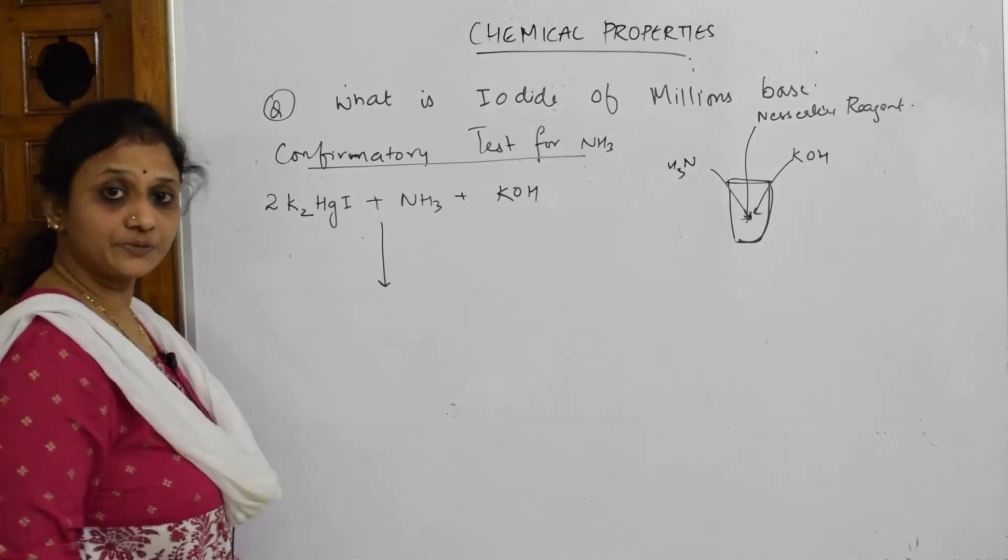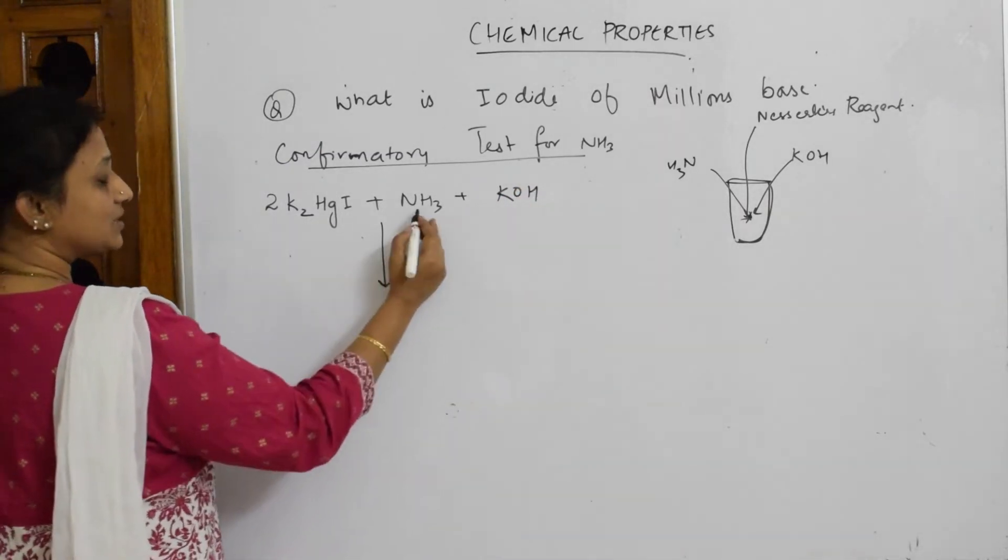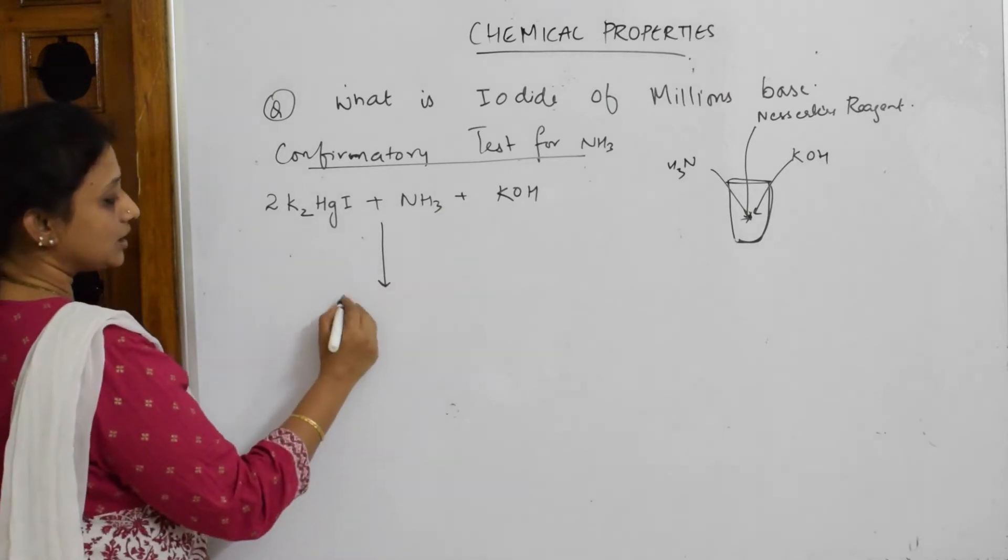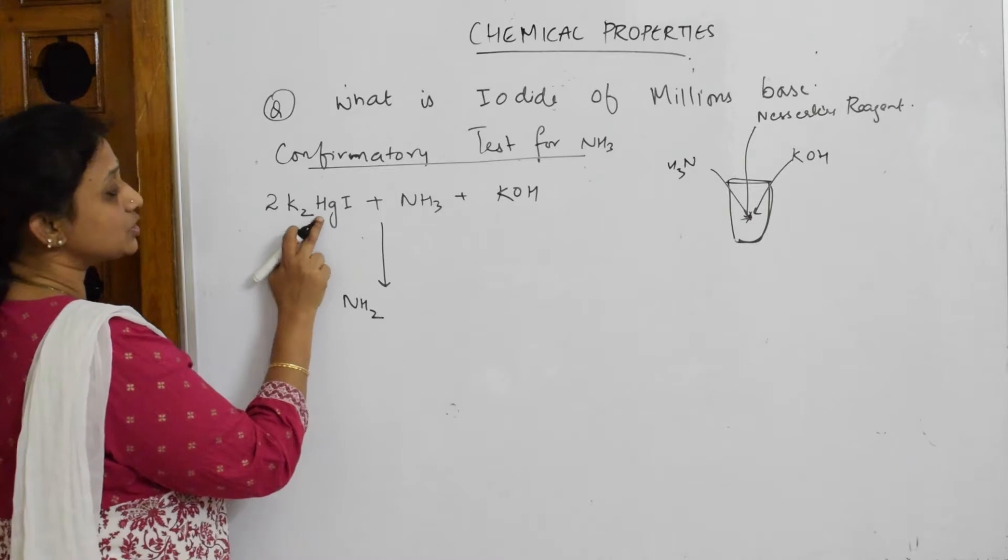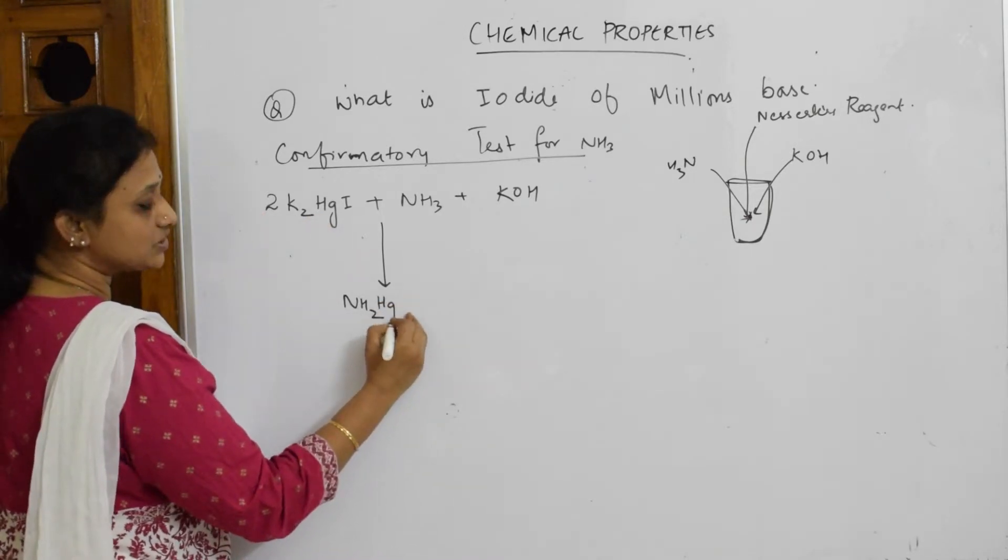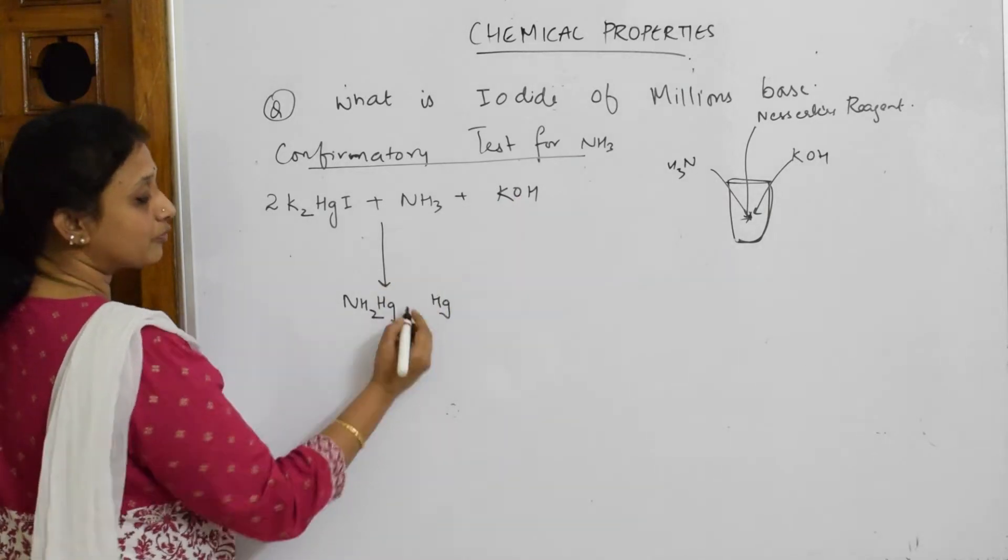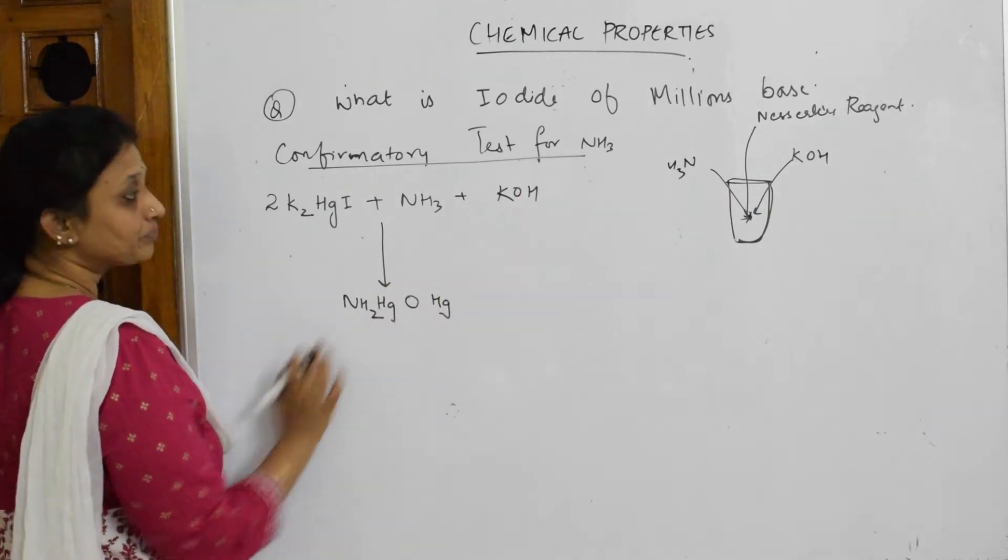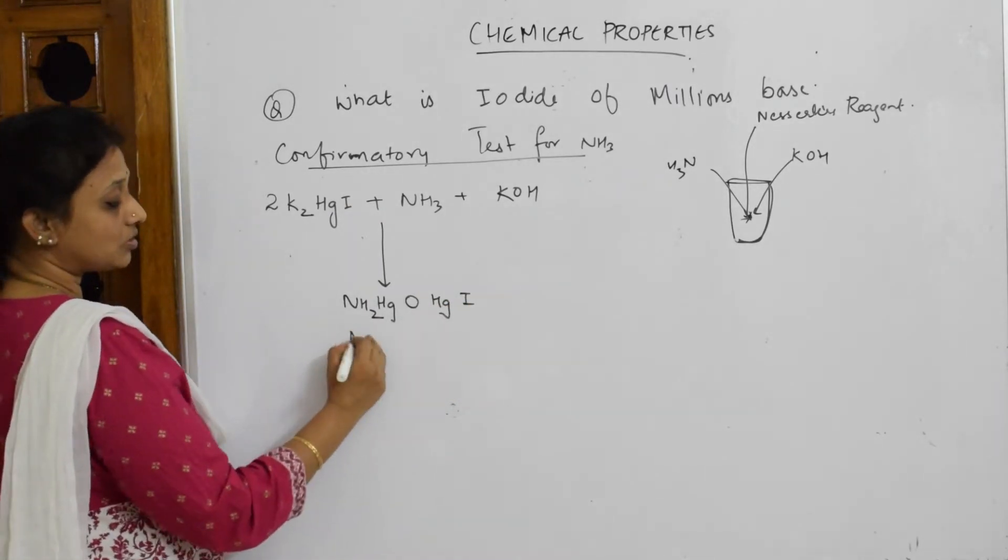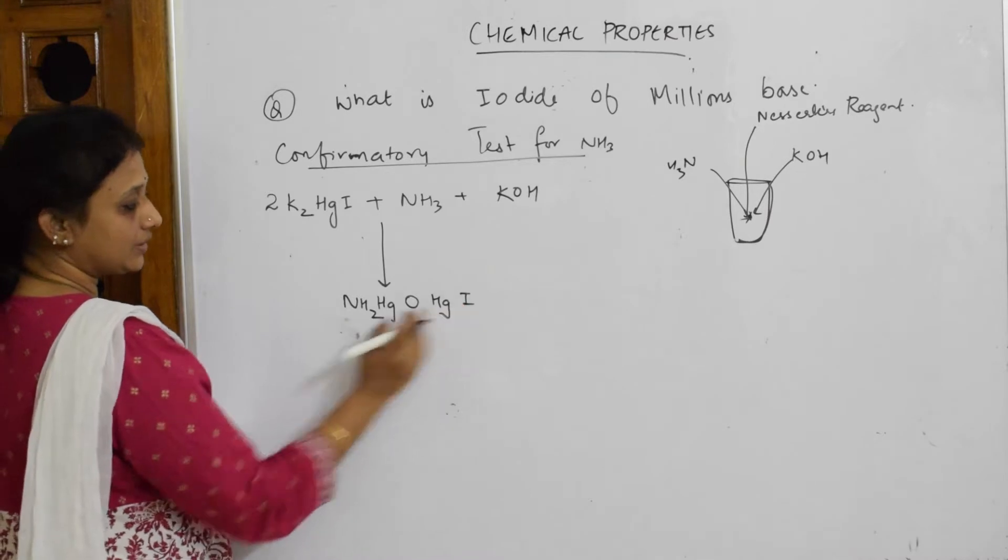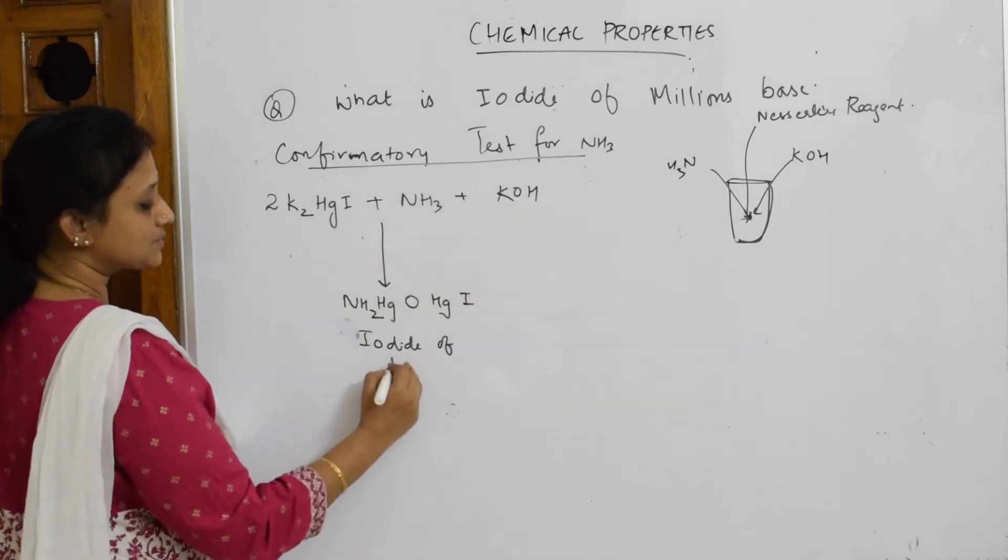Now observe carefully how I'm writing this. NH3 is going to get converted to NH2. How many HGs you have? You have two HGs. Write one HG here, write one more HG here. One O from here joins here, and iodine from here joins. This is called iodide of million's base.